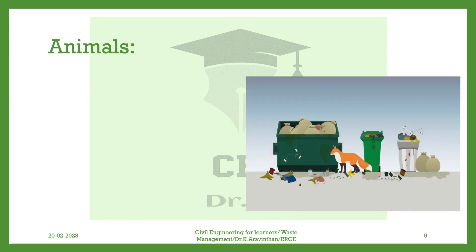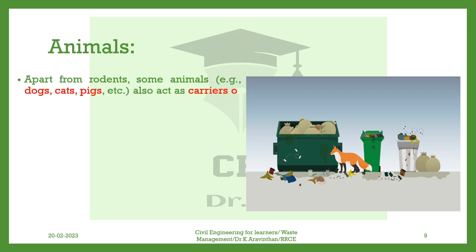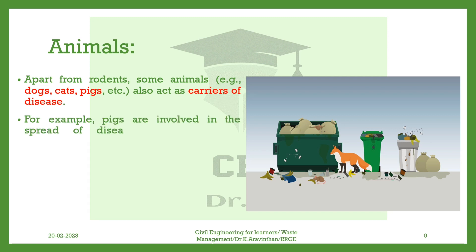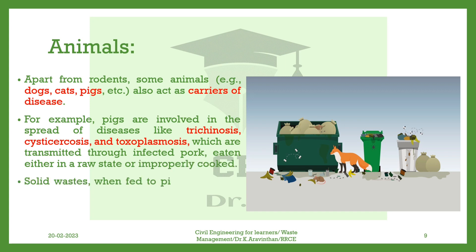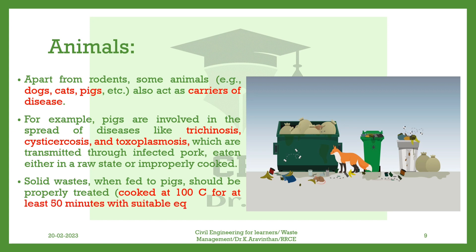Animals. Apart from rodents, some animals — e.g., dogs, cats, pigs, etc. — also act as carriers of disease. For example, pigs are involved in the spread of diseases like trichinosis, cysticercosis, and toxoplasmosis, which are transmitted through infected pork eaten either in a raw state or improperly cooked. Solid wastes, when fed to pigs, should be properly treated — cooked at 100 degrees Celsius for at least 50 minutes with suitable equipment.